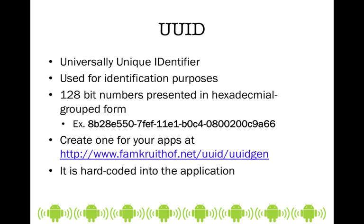The UUID — universally unique identifier — is for identifying a particular device. It consists of 128-bit numbers in hexadecimal format. There's a link you can go to to generate your own universally unique identifier to incorporate into your app. It is something that's hard coded into your application, not something that is on your device. Let's begin by going into your project and continue building to make your devices discoverable and pair with other devices.